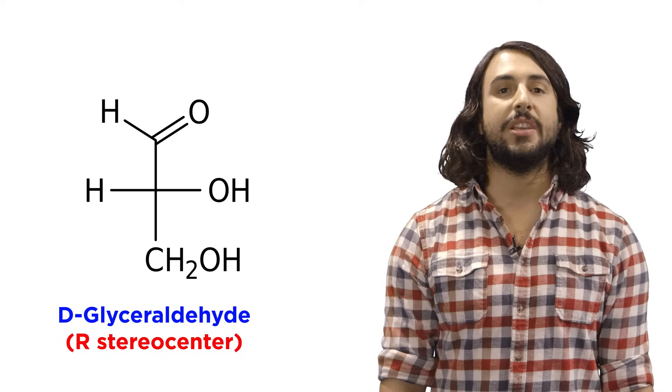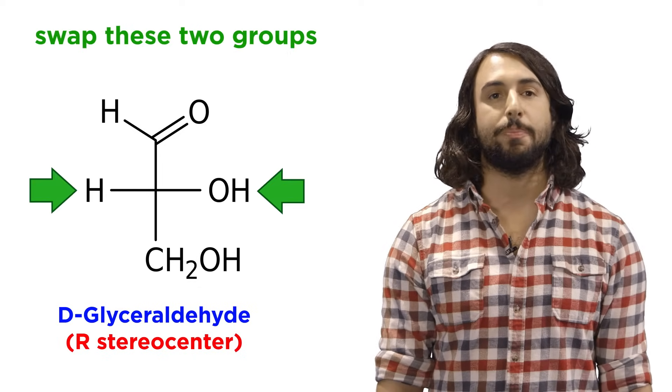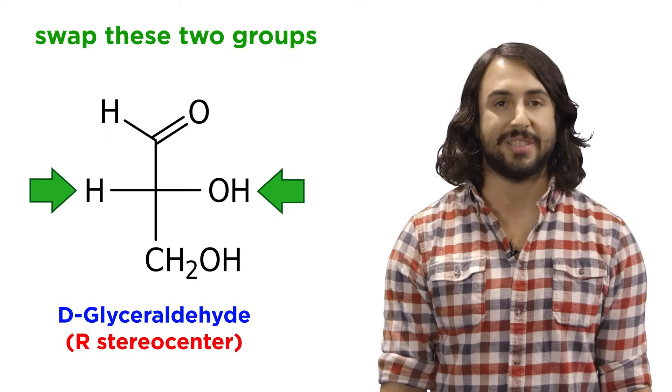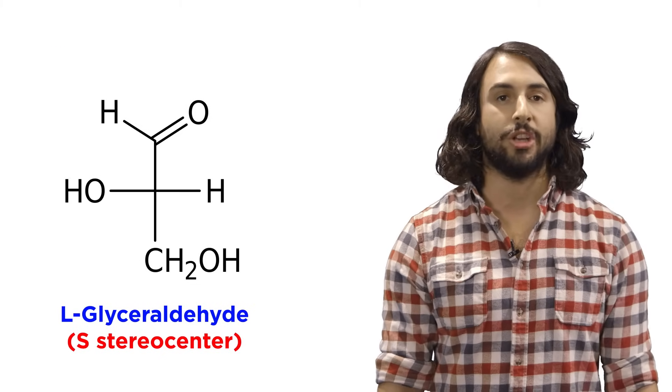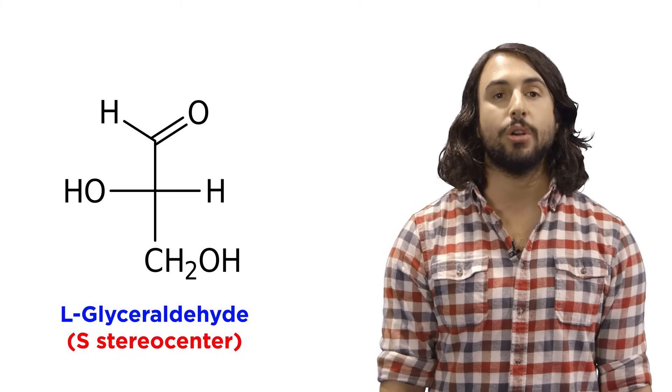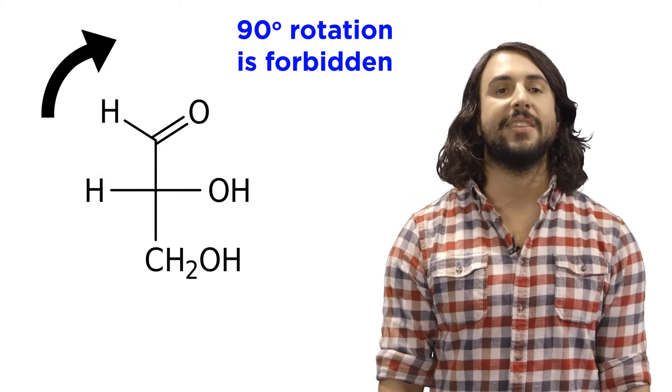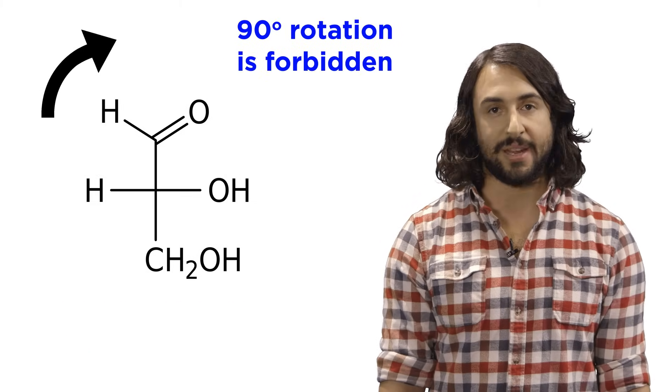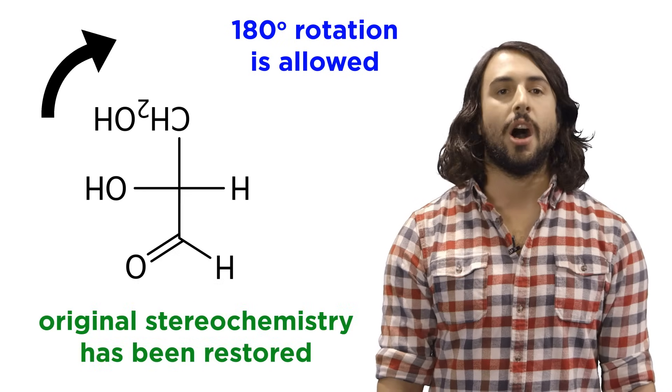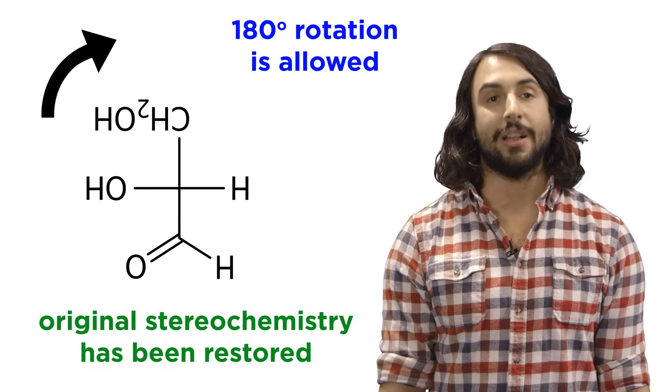Lastly with Fischer projections, let's be sure to understand that swapping the position of two groups on a chiral center results in the inversion of that stereocenter and a totally different molecule, and while ninety degree rotations are forbidden because they invert stereochemistry, 180 degree rotations are allowed.